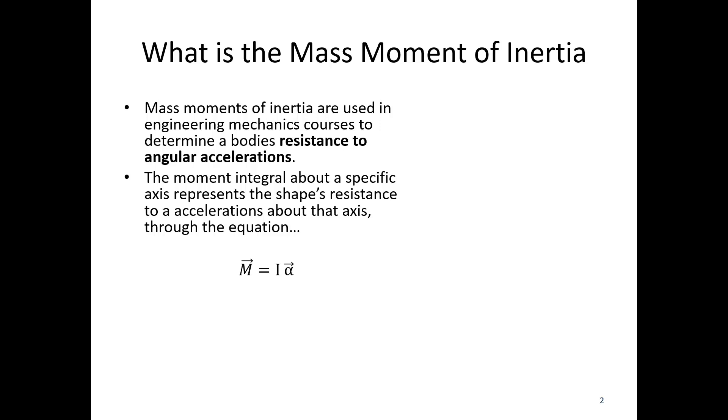This is essentially the rotational version of F equals ma. Instead of F, we've got the moment. Instead of m, we have the mass moment of inertia. And instead of acceleration, we have the angular acceleration. So if we have some body rotating about an axis, we apply a moment M, we would observe some alpha, and I is the term that's going to relate those two.